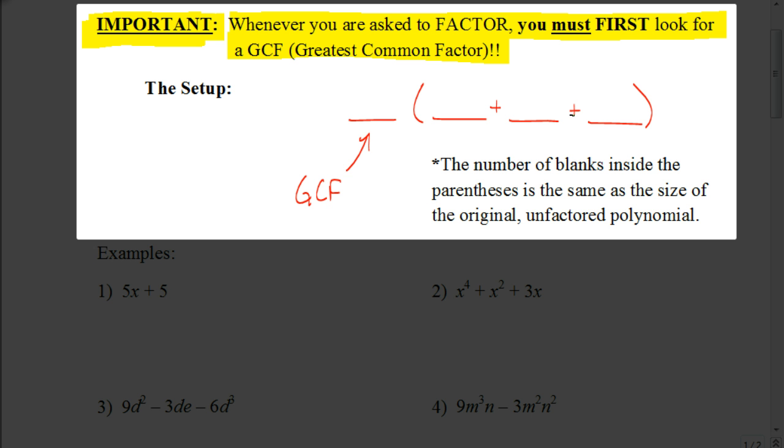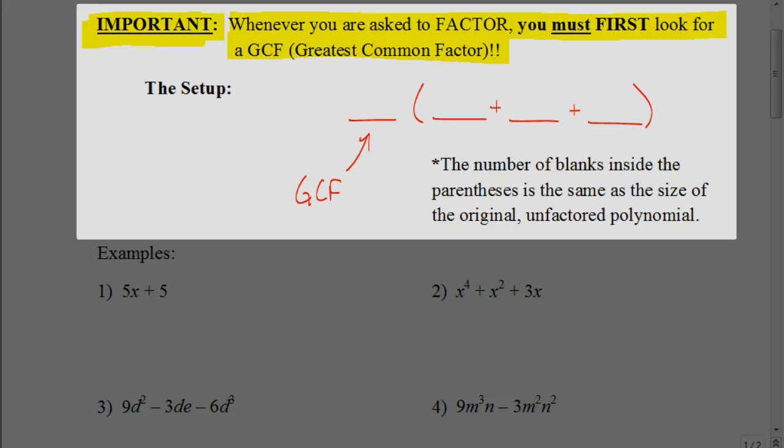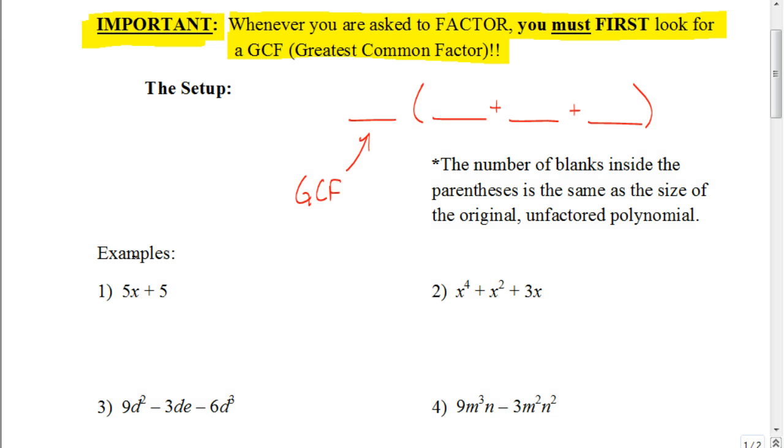For example, let's look at this first one here where we have 5x plus 5. There's going to be times where the GCF is just a number, times where it's just a variable, and other times where it's both a number and a variable. For this one, 5x plus 5, the greatest common factor in this case would just be the 5.